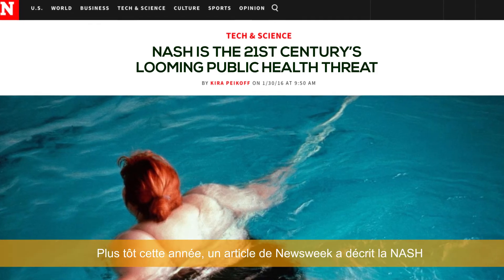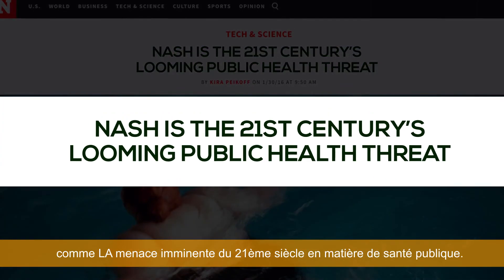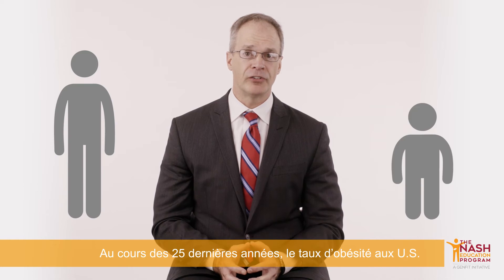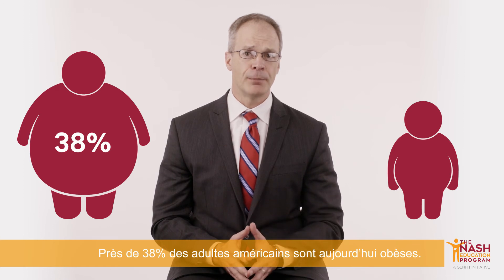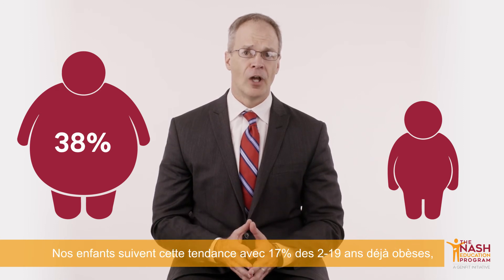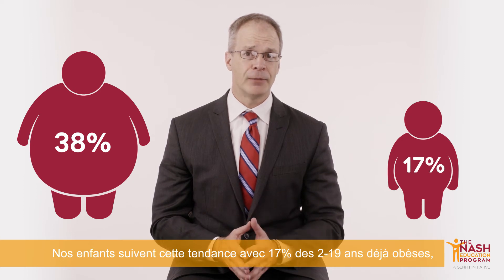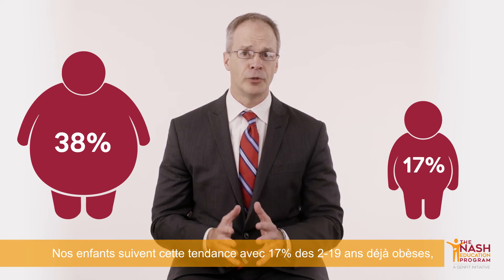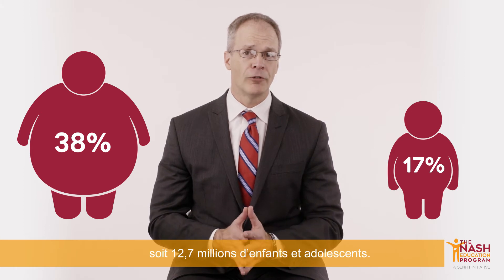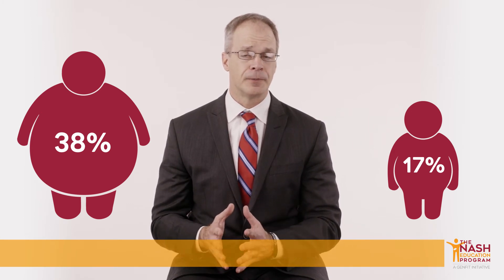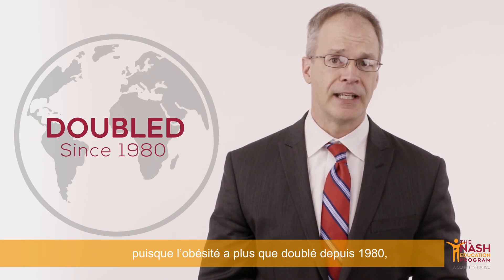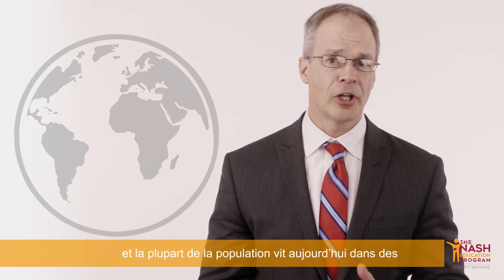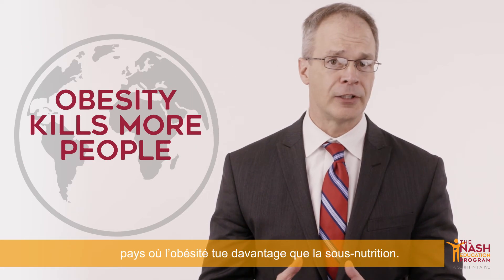Earlier this year, an article in Newsweek referred to NASH as the 21st century's looming public health threat. Over the past 25 years, obesity rates in the U.S. have more than doubled among adults and more than tripled among children. In fact, nearly 38 percent of American adults are now obese, and about 17 percent of children and teens from 2 to 19 years of age are obese — that's about 12.7 million children and adolescents. The global picture is not much better: worldwide obesity has more than doubled since 1980, and much of the world's population today live in countries where overweight and obesity kills more people than underweight.